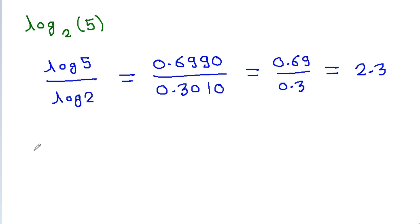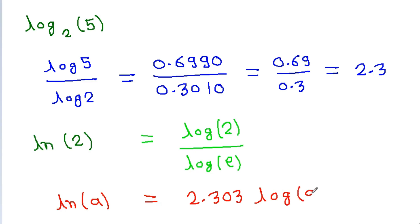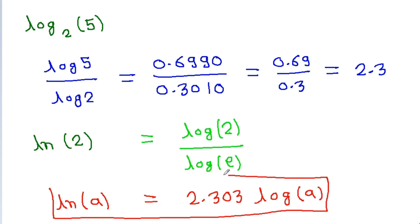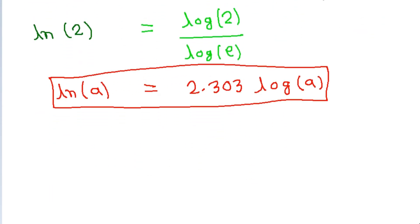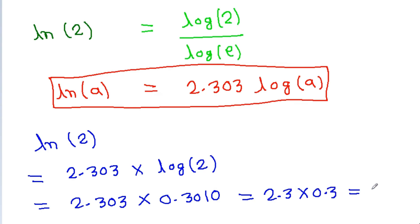If we have to find the value of natural log of 2, it equals log 2 divided by log e. Or you can use the direct formula: natural log of any number a is equal to 2.303 times log a. So natural log of 2 = 2.303 times log 2 = 2.303 times 0.3010 ≈ 2.3 times 0.3 = 0.69.